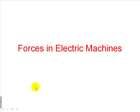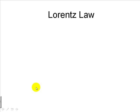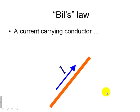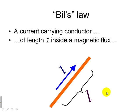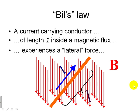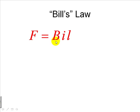Let's review now the forces in electric machines — Lorentz law. But we will call it rather Bill's law, with only one L. Let's see why. Where a conductor carries a current I and a length L of that conductor is inside a magnetic flux with a flux density B, what's going to happen is that the magnetic flux will apply a lateral force on the conductor. The force is proportional to the flux density B, to the current I in the conductor, and to the length of the conductor immersed in the magnetic field.